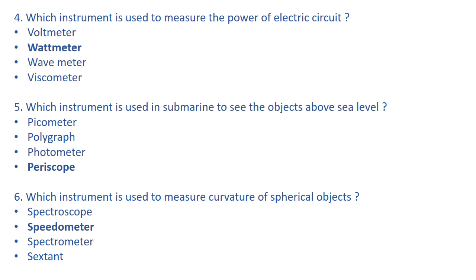Which instrument is used in a submarine to see objects above the sea level? The right answer is periscope. Periscope is an instrument with which you can see any object above the sea level from a submarine. Picometer is used to determine the density and coefficient of expansion of a liquid.